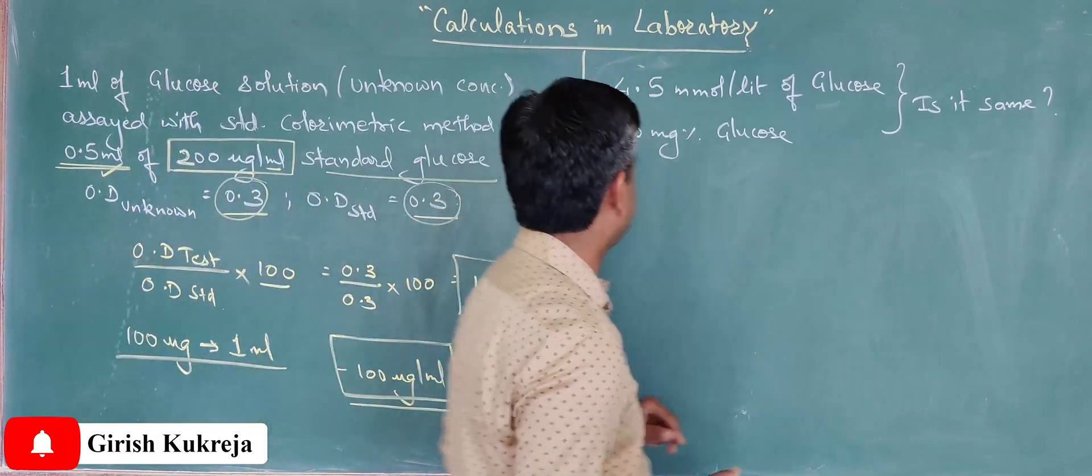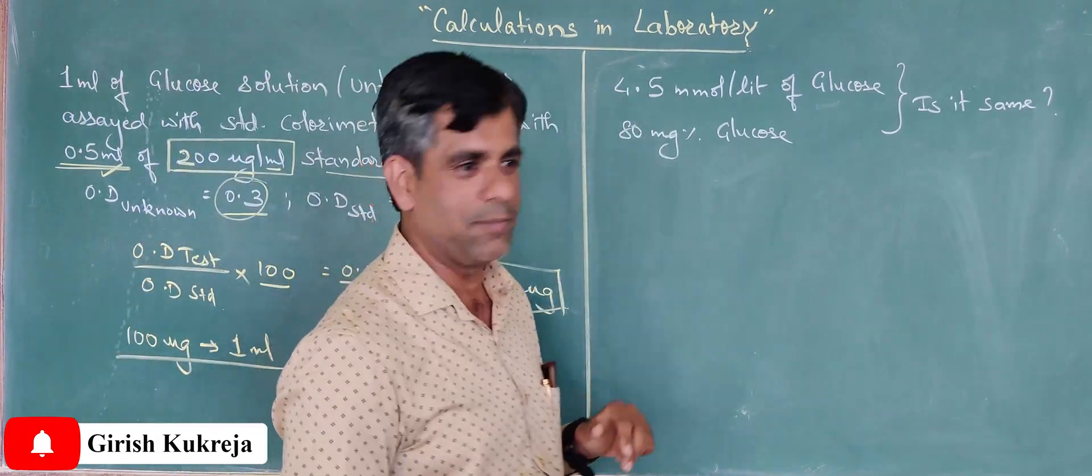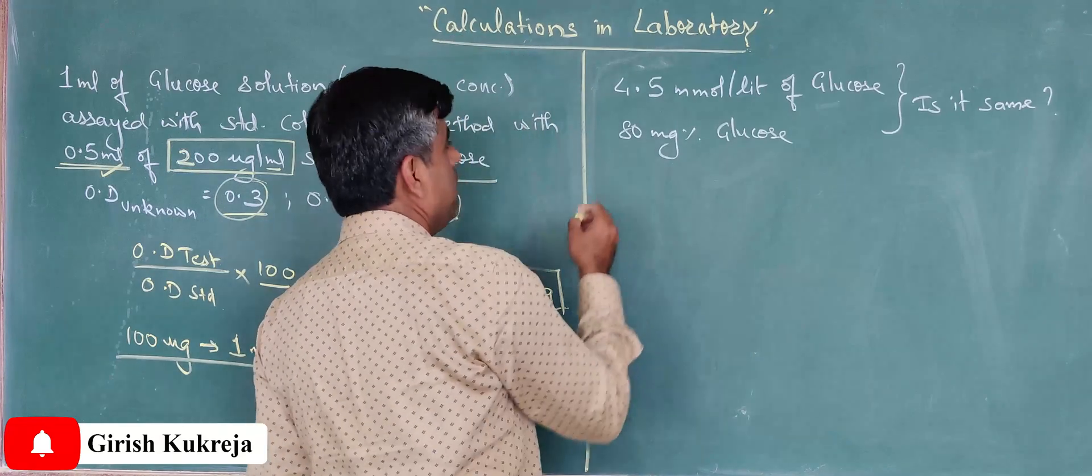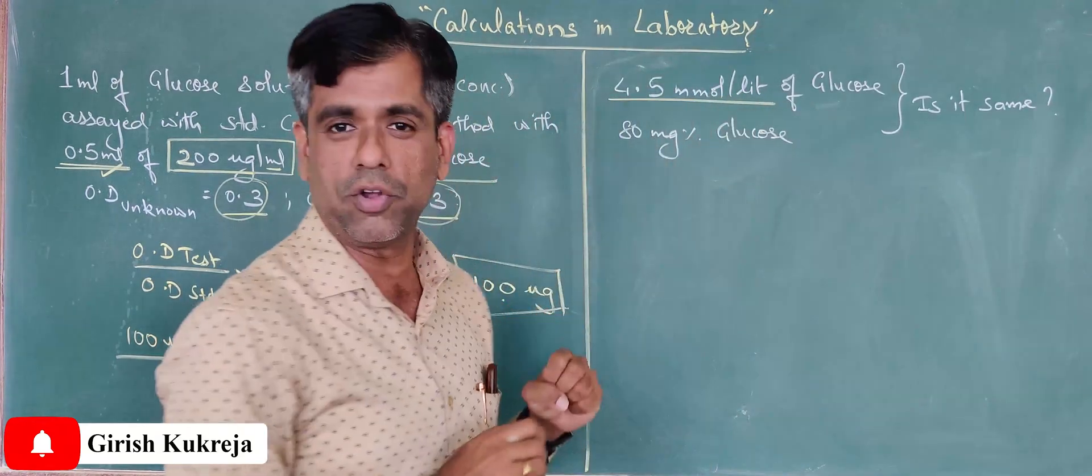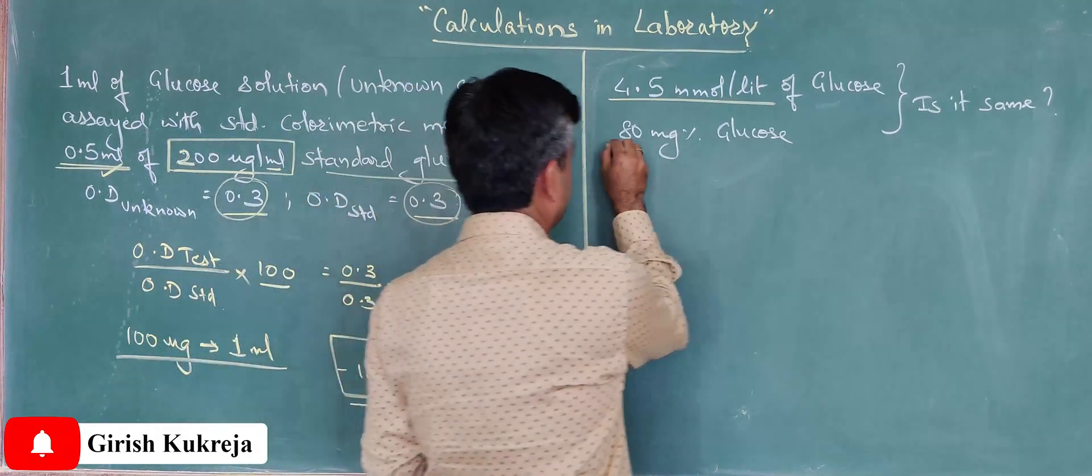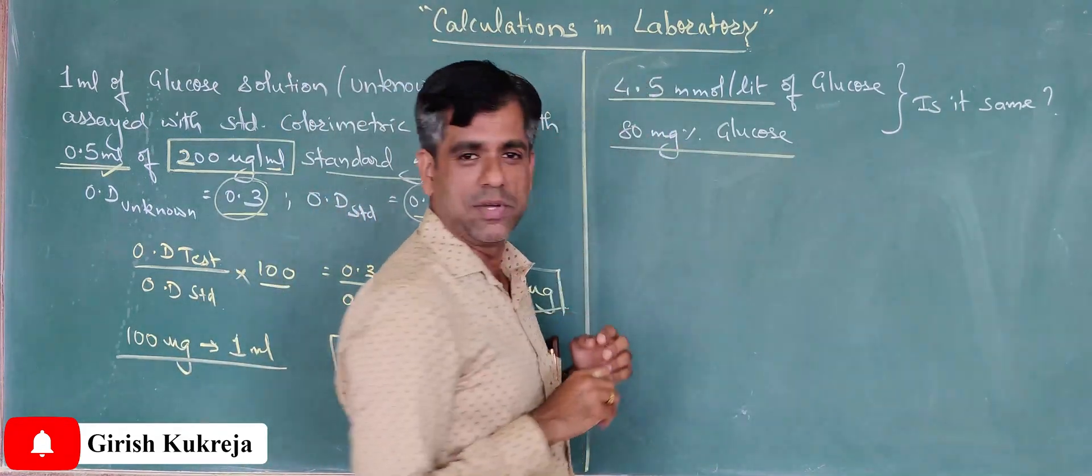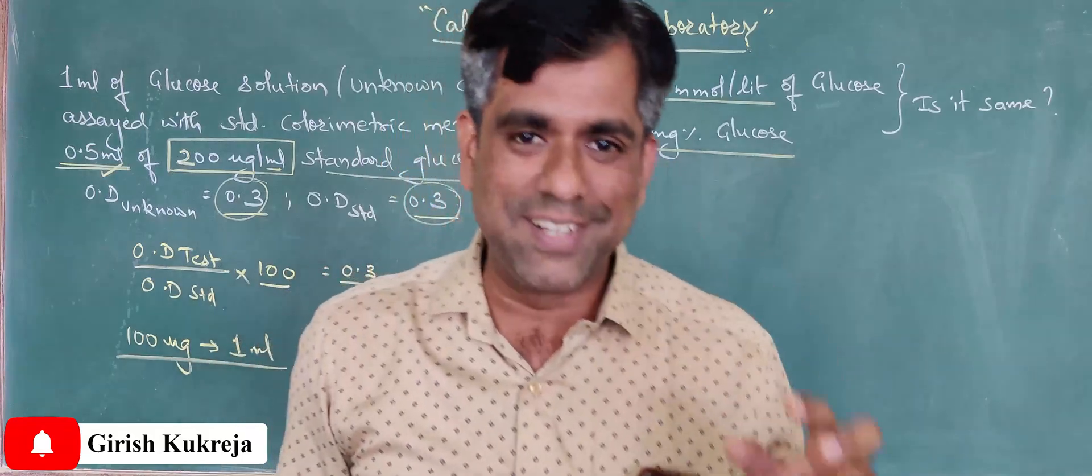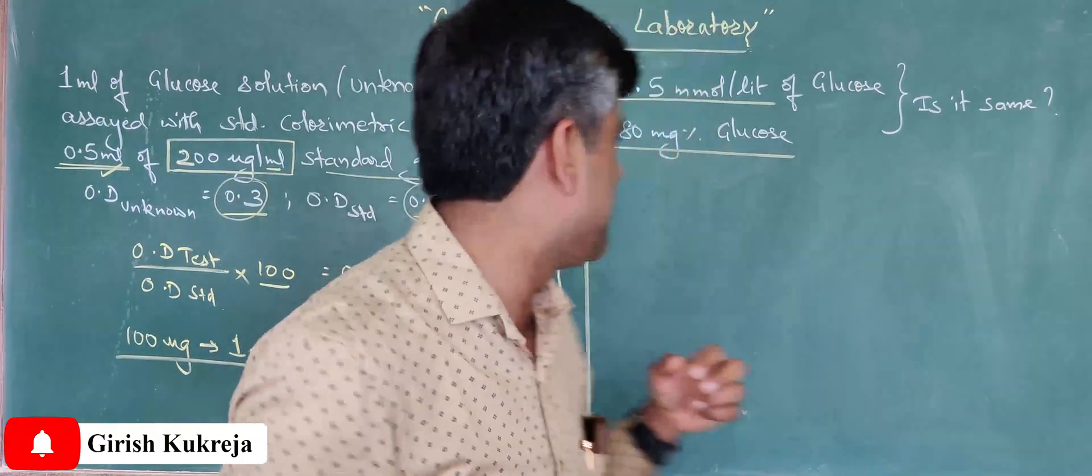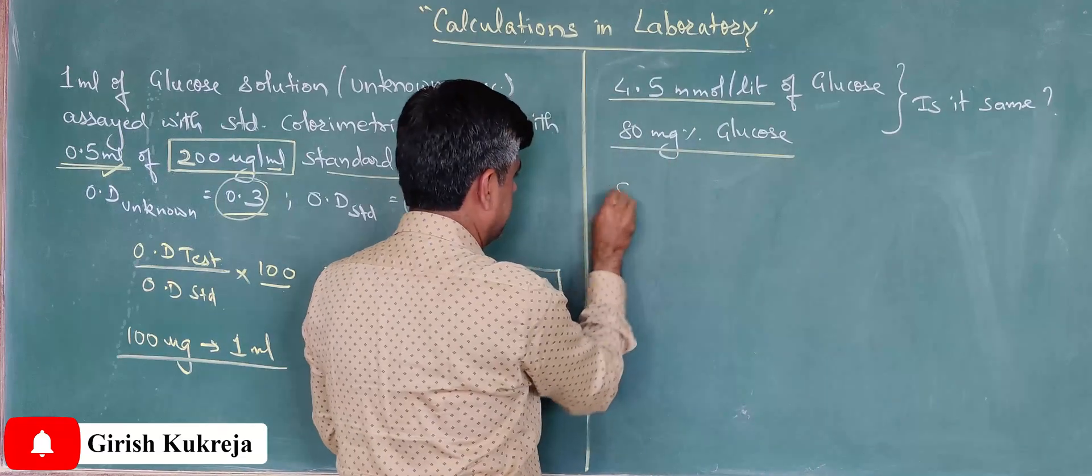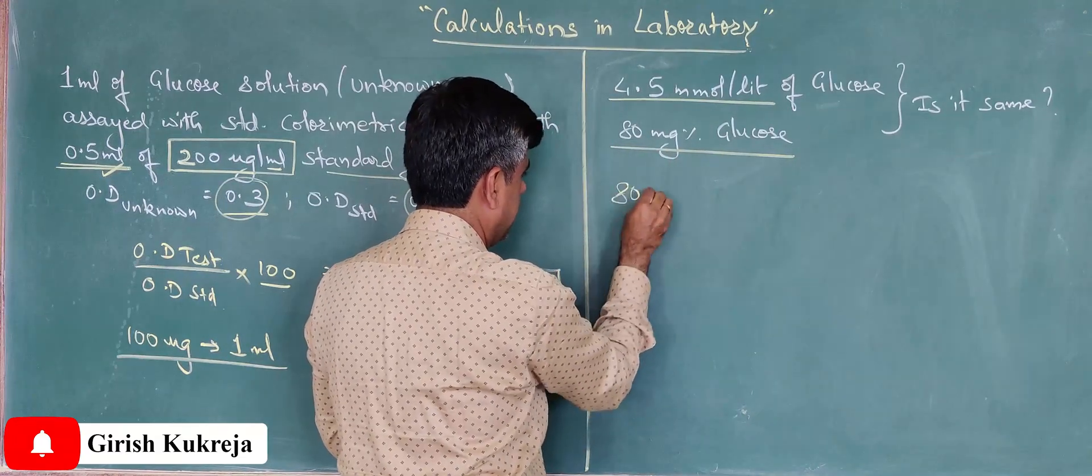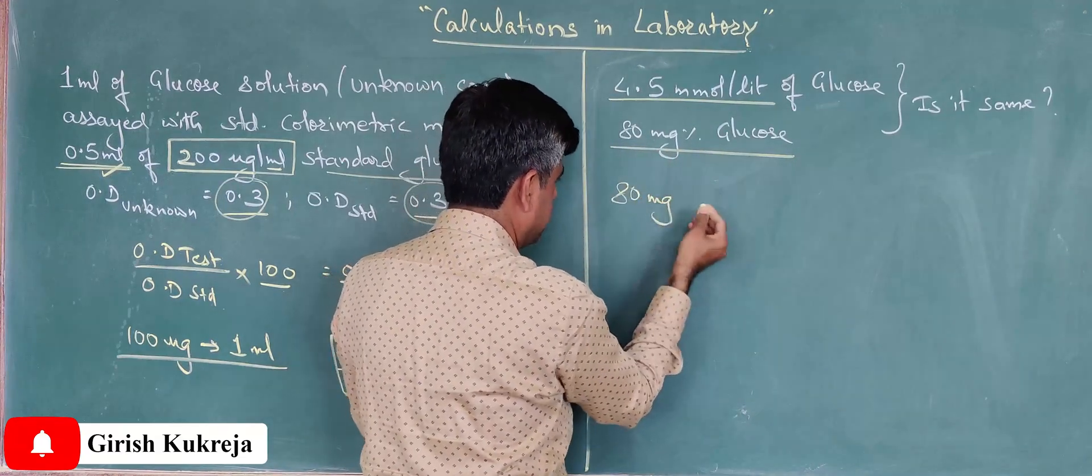Yeah, sometimes people try to confuse you with different numbers and calculations. Similarly, one guy came to me and reported that he has around 4.5 millimoles per liter of glucose. Another guy came and told me, no no, it is 80 milligram percent glucose. Now I need to find out whether they mean the same or they mean different.